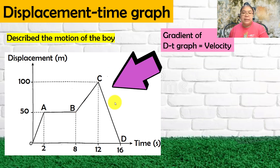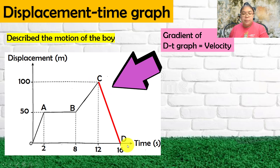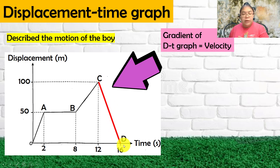The second-to-last part, C to D: the slope goes downward. When the slope goes downward, the gradient is negative. For a displacement-time graph, this means the boy is moving in the opposite direction — going back to the original position, which is zero. We need to write the coordinates first before doing the calculation.